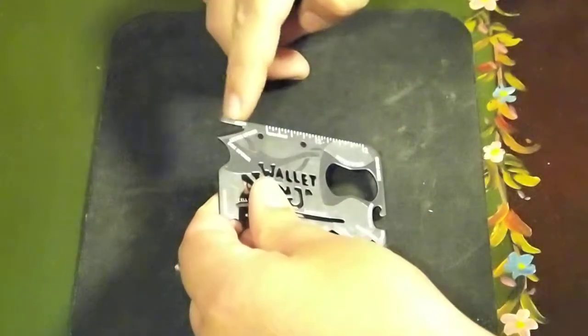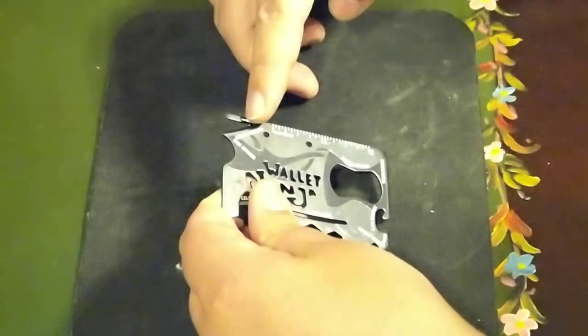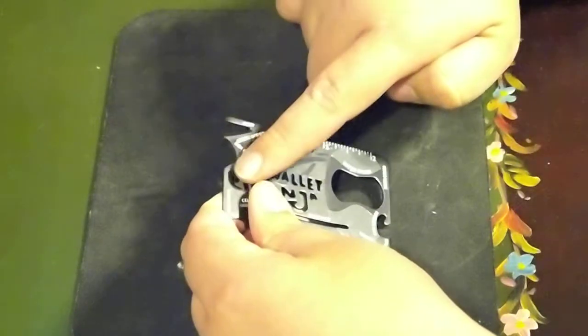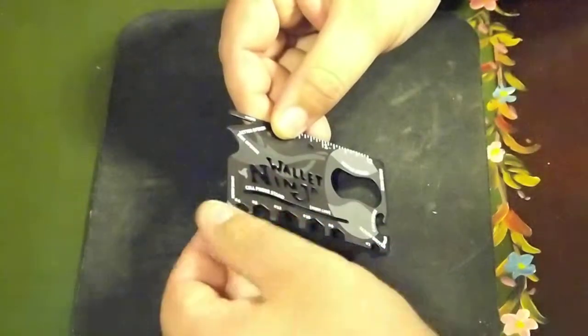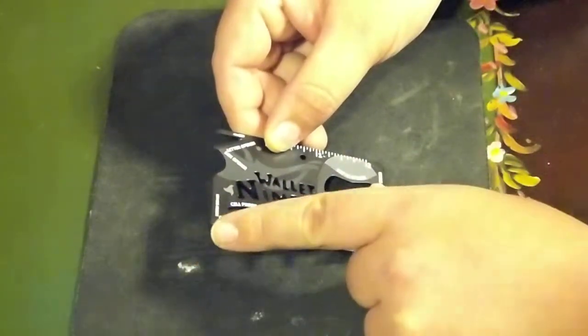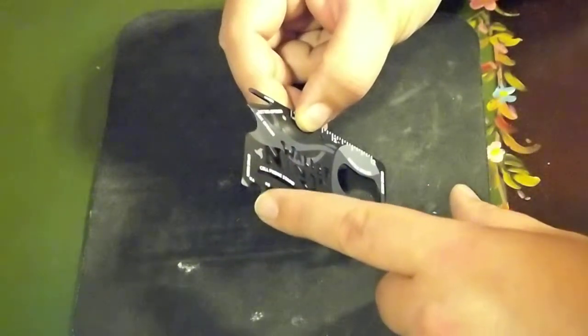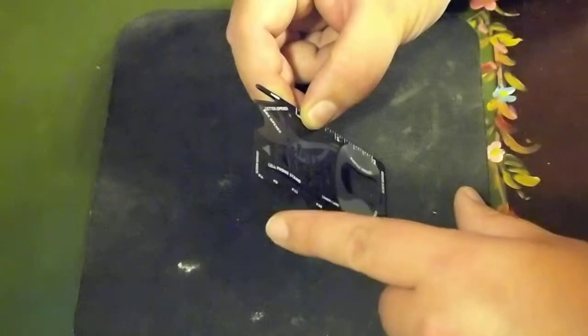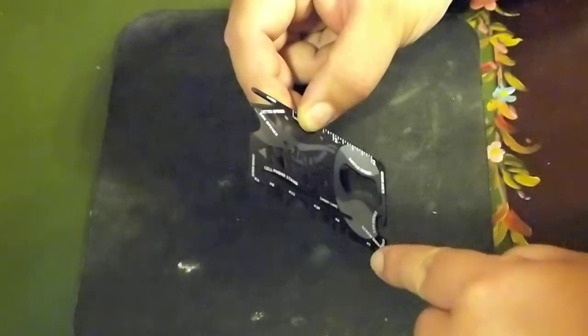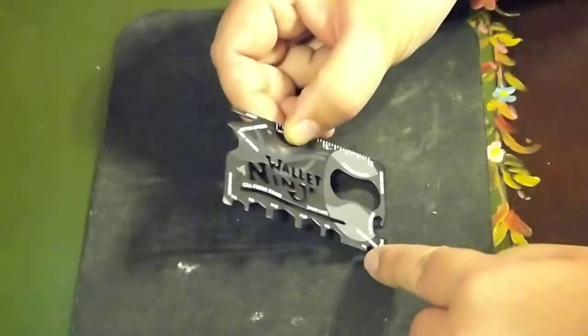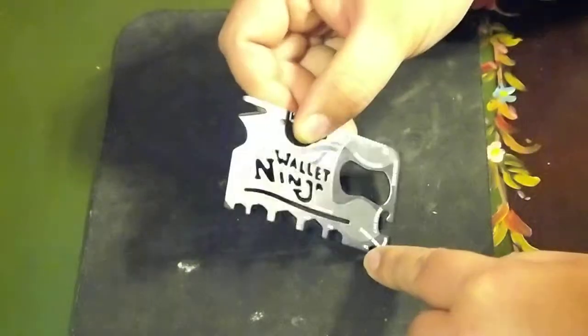You're looking at a screwdriver, a letter opener, a box cutter right here, another screwdriver right here at the end, and then number four, eight, twelve, ten, sixteen, and two wrenches. So I'm guessing that was metric.